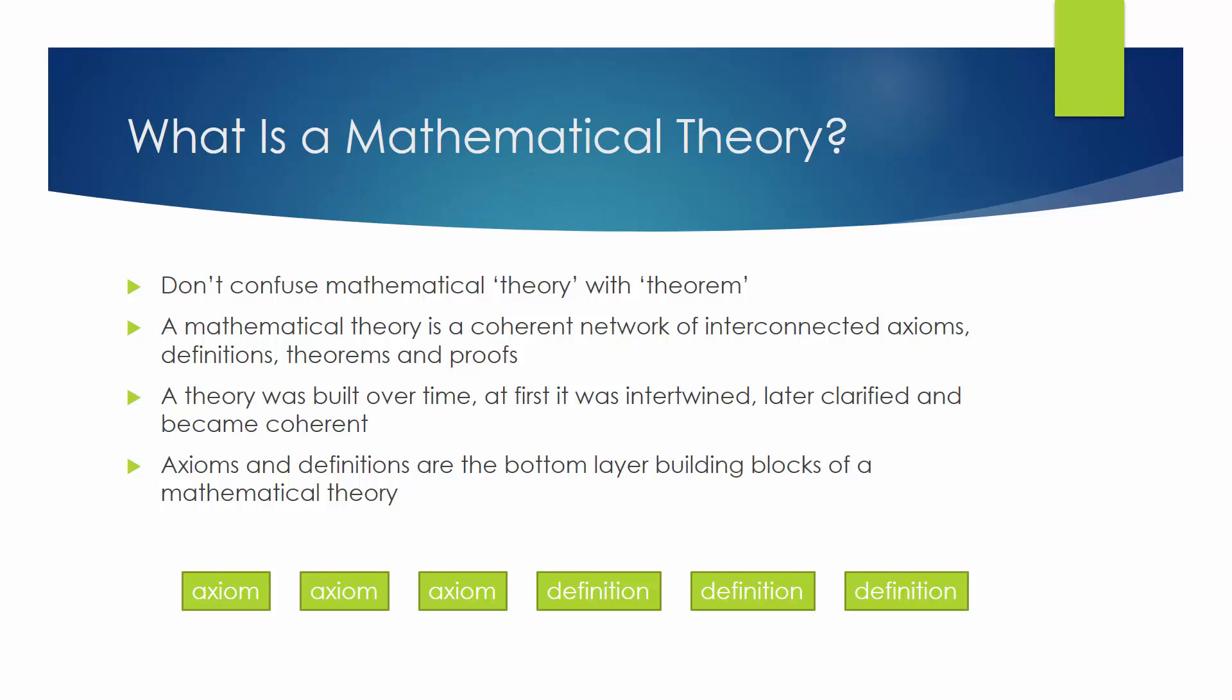First, let's clarify the difference between a mathematical theory and a theorem. A theorem is a single statement about a relationship between some mathematical concepts. A mathematical theory is a coherent network of interconnected axioms, definitions, theorems, and proofs.